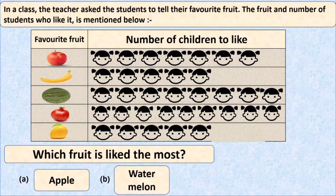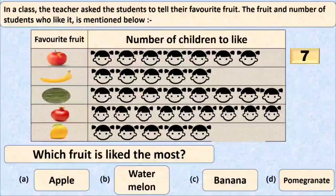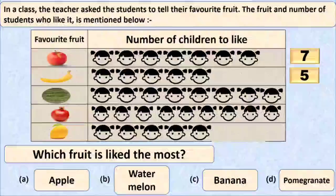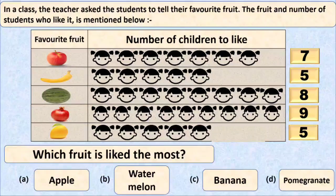Option A is apple, option B is watermelon, option C is banana, and option D is pomegranate. Let's count the number of students for each fruit. The number of students who like apple is seven, banana is five, watermelon is liked by eight students, pomegranate is liked by nine students, and mango is liked by five students.